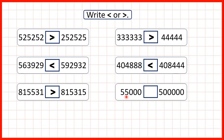And now we have 55,000 and 500,000. We need to spot that we're not comparing numbers with the same number of digits, and because we have whole numbers, we know that the number with the most digits will be larger. Here we have five in the hundred thousands but here we don't have anything in the hundred thousands, so we know that our second number is larger.